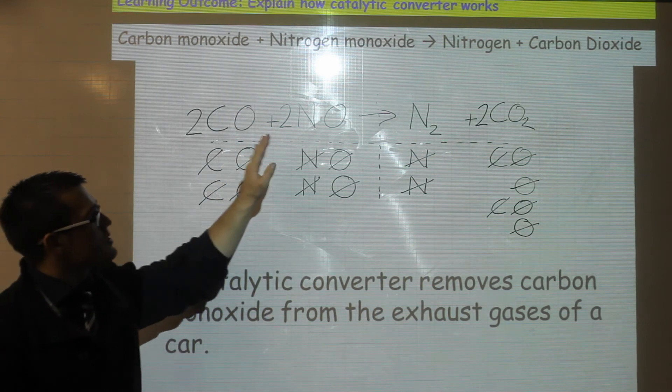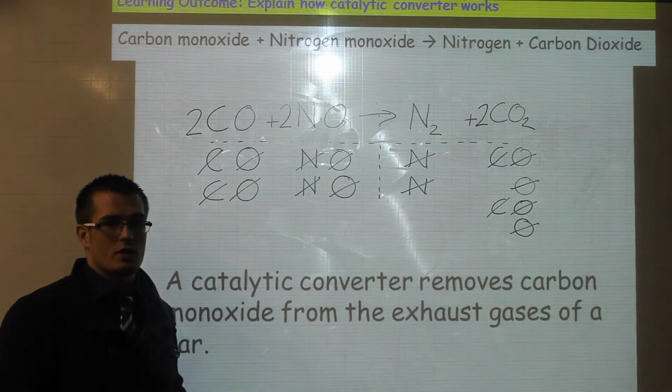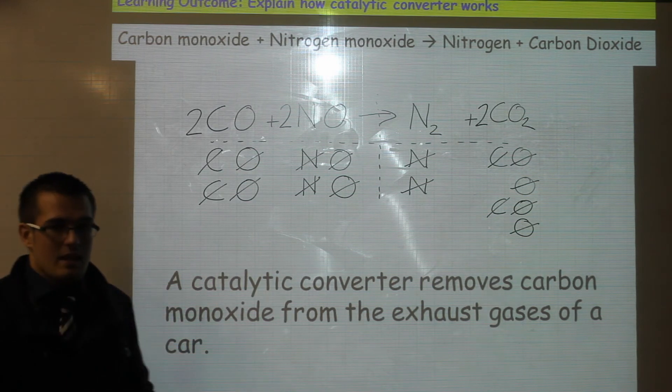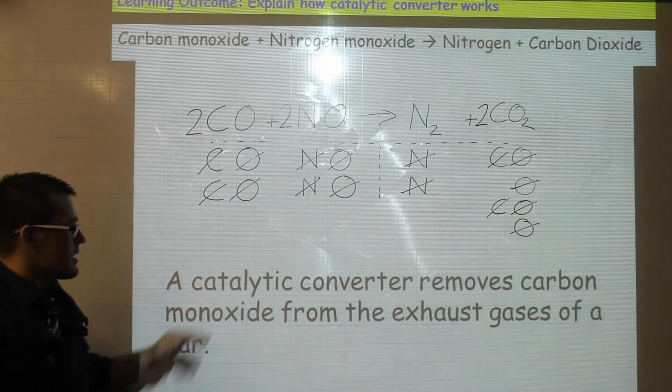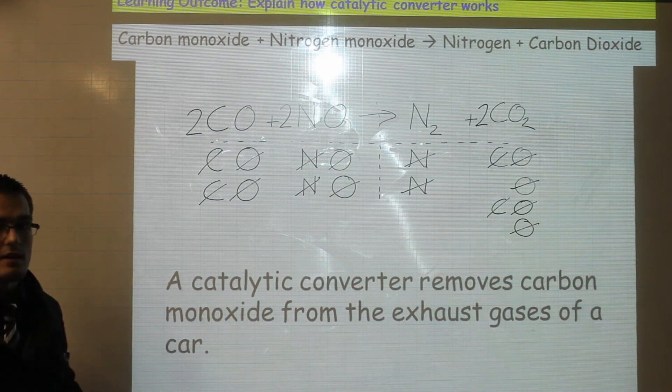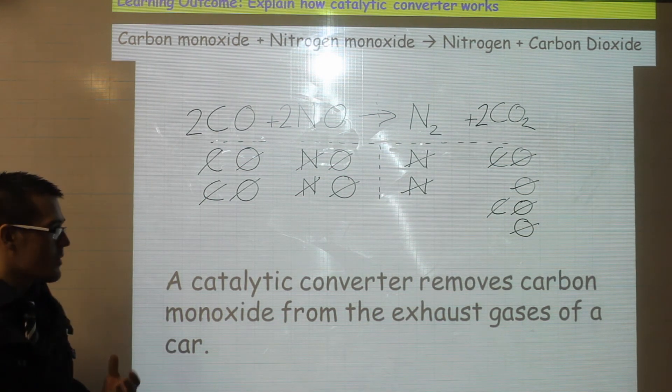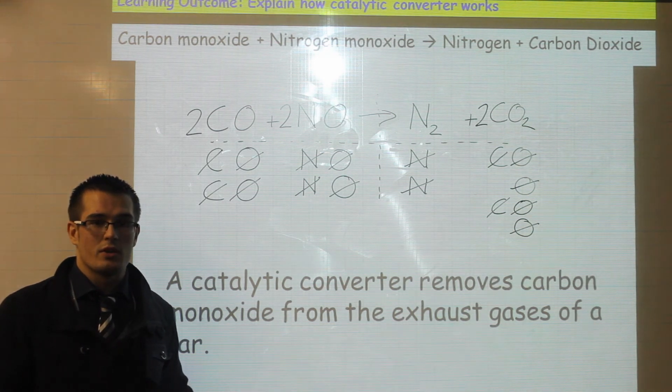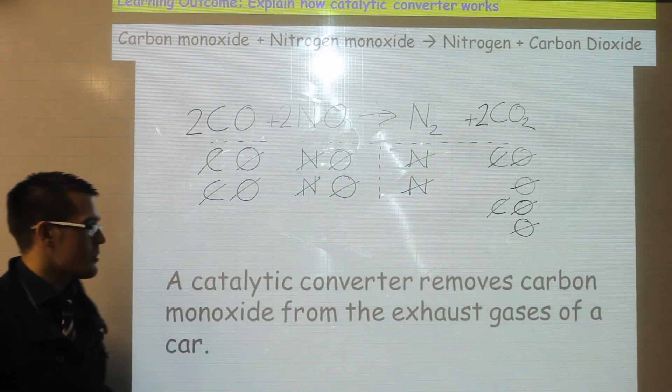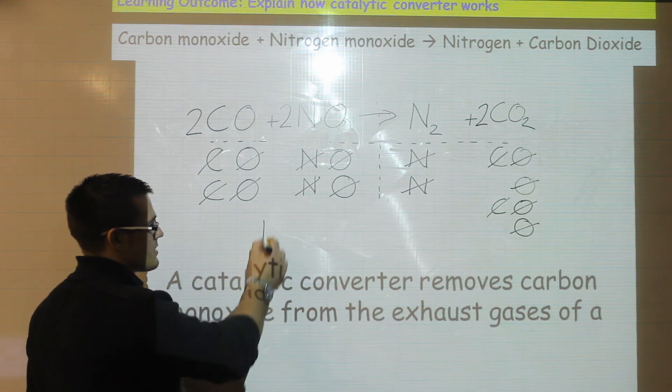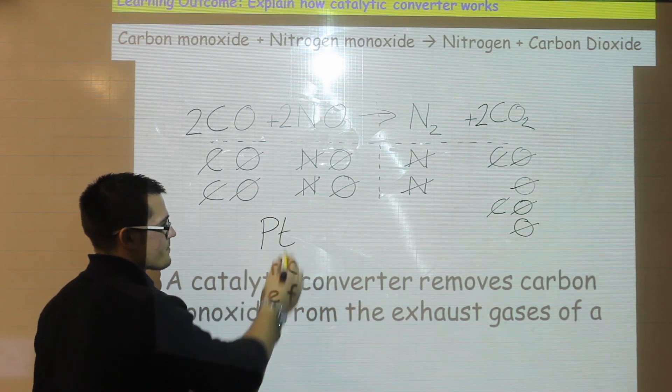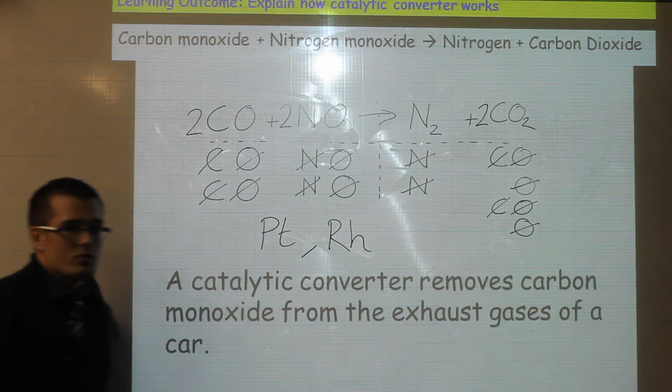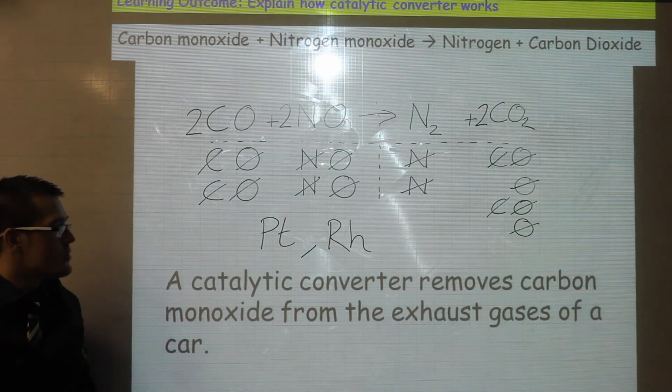Now catalytic converter gets its name because inside the catalytic converter there is a mesh that is made, that is the catalyst. Now a catalyst increases the rate of a reaction without being used up and it provides a surface for the reaction to happen off. Now common materials used in catalytic converters are platinum and rhodium. Other materials can be used but these are two common precious metals that are used.